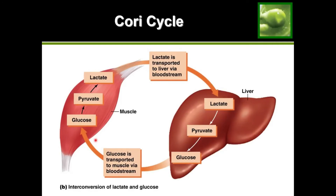Since the anaerobic pathway can't do any more at this point, one thing it can do is try to regenerate glucose so that we can perform glycolysis again, because every time we perform glycolysis, we make 2 ATP. The goal of the anaerobic pathway, or the Cori cycle, is to regenerate glucose and force our body to do glycolysis again so that we can make 2 ATP. Then we come around again, regenerate glucose, go through glycolysis again, and make another 2 ATP — over and over.